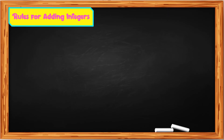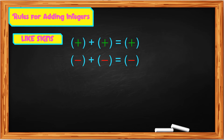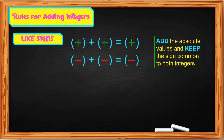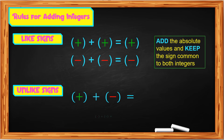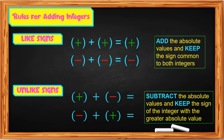To sum it up, the rules for adding integers: For like signs — positive plus positive equals positive; negative plus negative equals negative. Add the absolute values and keep the sign common to both integers. For unlike signs — positive plus negative or negative plus positive — subtract the absolute values and keep the sign of the integer with the greater absolute value.